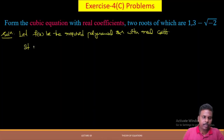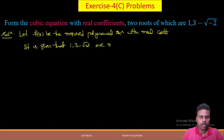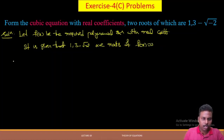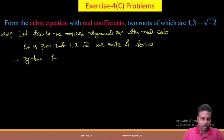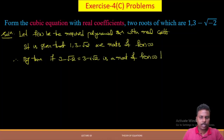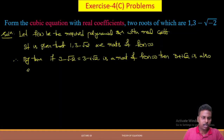It is given that 1 and 3 − √(−2) are roots of f(x) = 0. Since 3 − √(−2) = 3 − i√2 is a root, by the theorem we proved earlier, its conjugate 3 + i√2 is also a root of f(x) = 0.